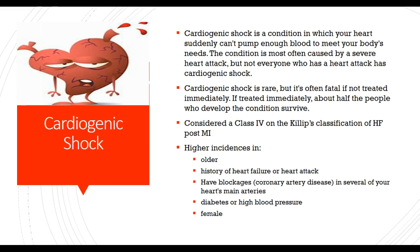The end stage is cardiogenic shock. Whenever cardiac output is compromised, tissue perfusion is compromised — and shock is inadequate tissue perfusion. Cardiogenic shock is a condition in which your heart suddenly can't pump enough blood to meet your body's needs. It's most often caused by severe heart attack, though not everyone who has a heart attack develops cardiogenic shock. It is rare, but often fatal if not treated immediately. With immediate treatment, about half the people who develop the condition survive. It's considered Killip class IV — the highest classification of post-MI heart failure.